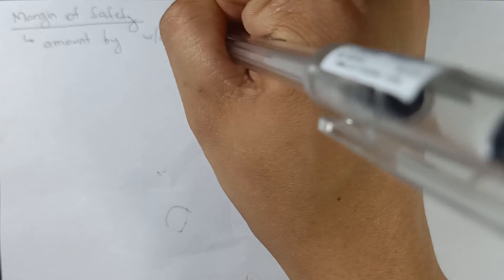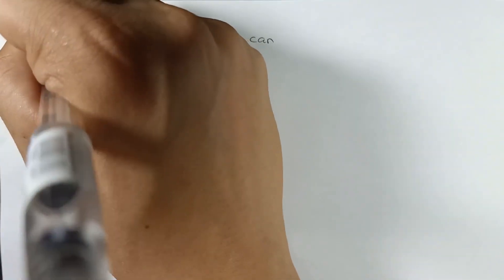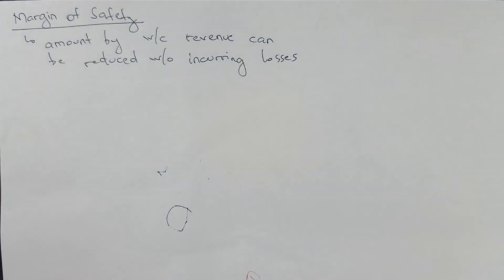Our topic for today will be all about margin of safety and degree of operating leverage — the other tools in CVP analysis. Margin of safety is the amount by which revenue can be reduced without incurring losses. That's why it's called margin of safety: even if sales decrease by this amount, we still won't incur a loss.